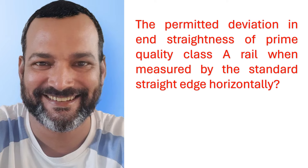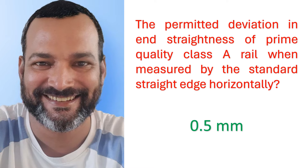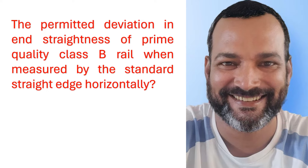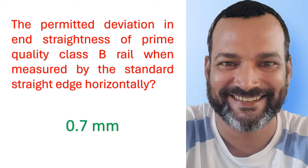The permitted deviation in end straightness of prime quality Class A rail when measured by the standard straight edge horizontally is 0.5 millimeter. The permitted deviation in end straightness of prime quality Class B rail when measured by the standard straight edge horizontally is 0.7 millimeter.